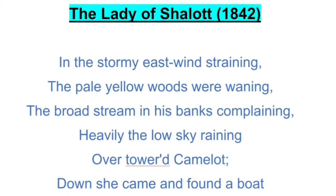In the stormy east wind straining, the pale yellow woods were waning. The day was very much windy. The east wind was blowing hard and as a result the yellow-colored woods — several plants or trees — were shedding their leaves, described as waning.